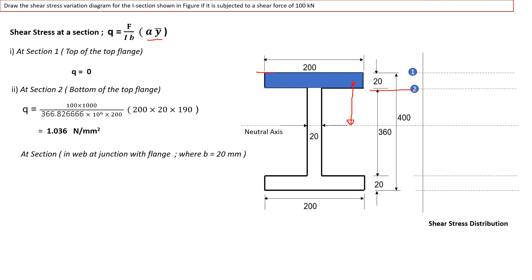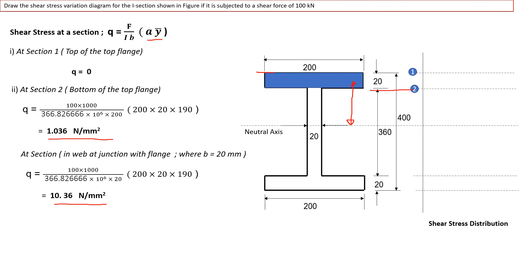Just below the flange, the width changes from 200 mm to 20 mm (the web width). By substituting b = 20 in the same formula, we get the shear stress at that level as 10.36 N/mm². We can clearly see how the shear stress jumps from 1.036 to 10.36 at the flange-web junction.